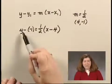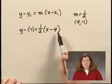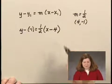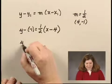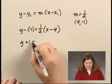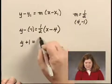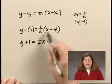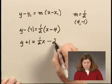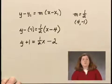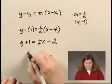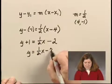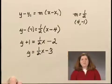With x and y as the variables, this is an equation of the line. Now we'll write it in slope-intercept form. We have y plus 1 equals 1/2 x minus 1/2 times 4, or 2. Subtracting 1 from both sides, we end up with y equals 1/2 x minus 3. And we have an equation of the line.